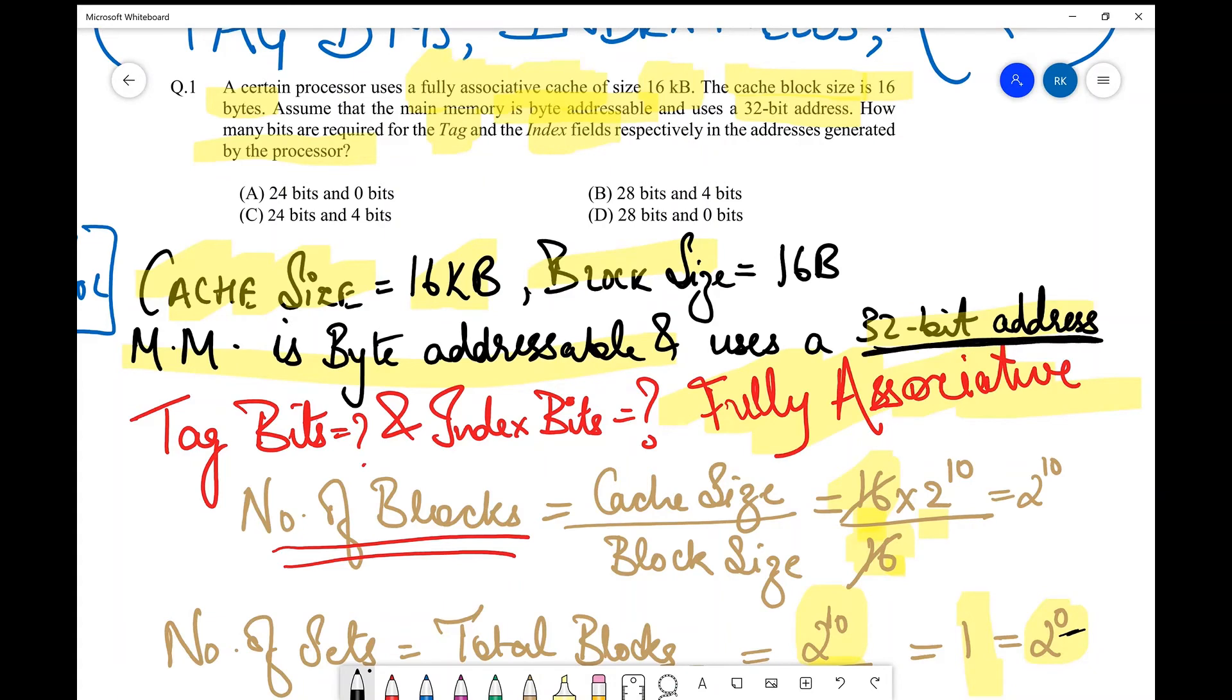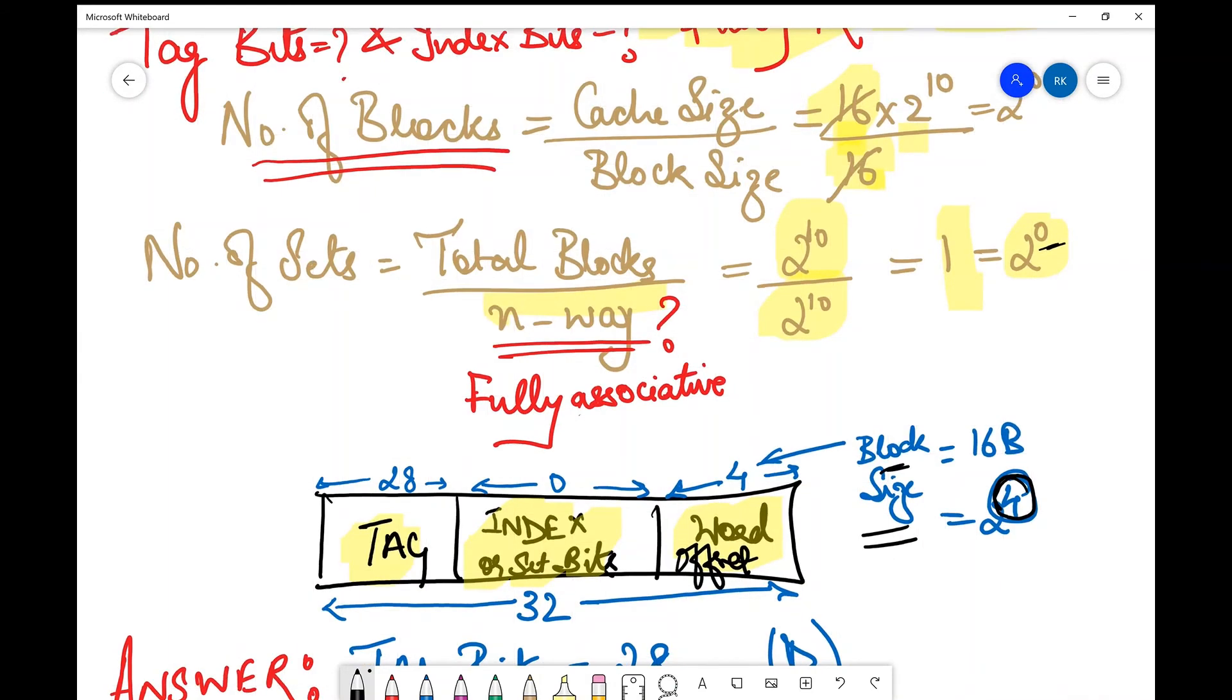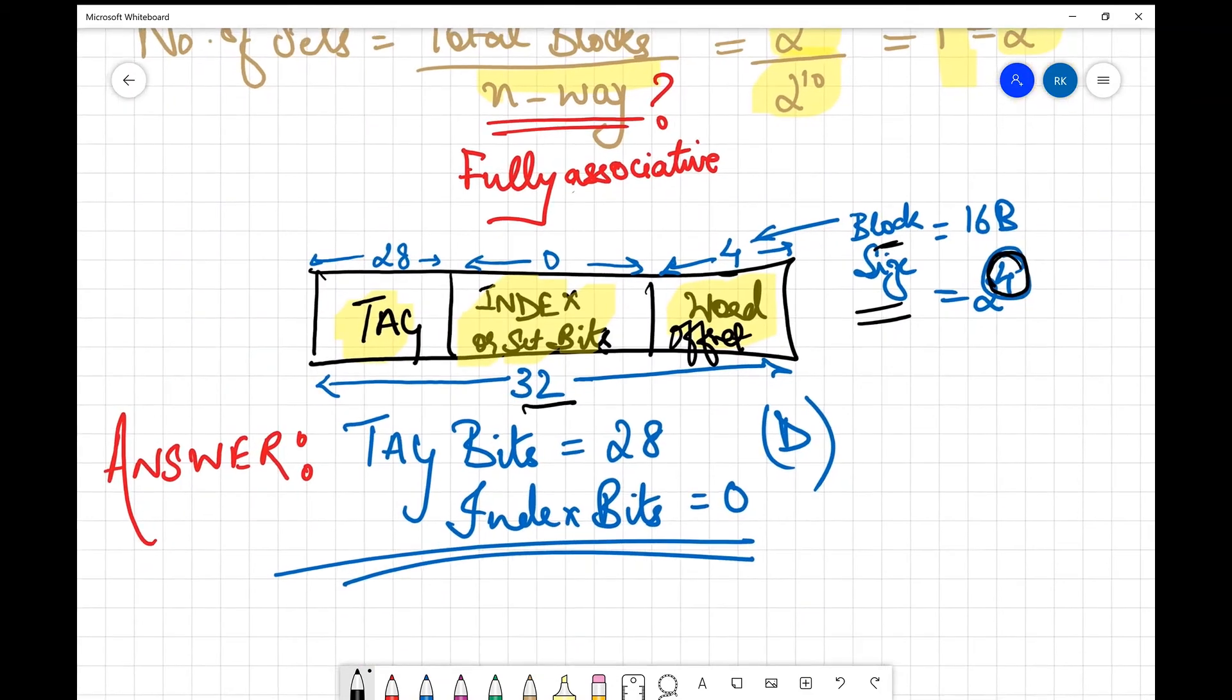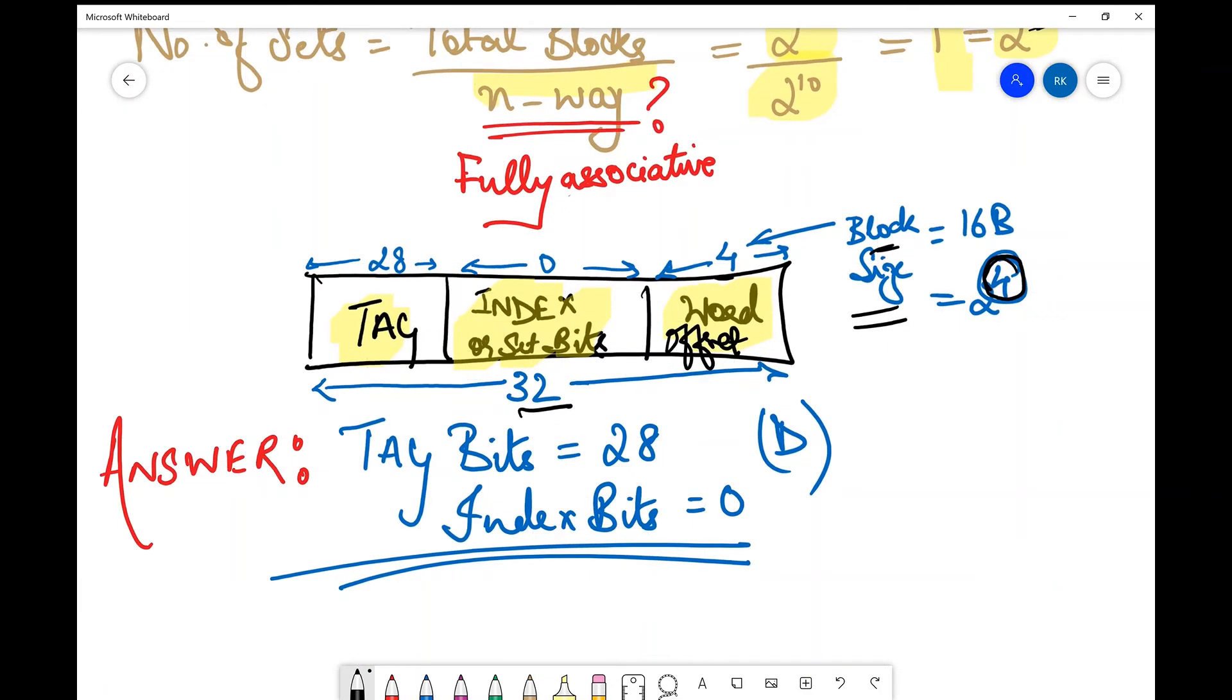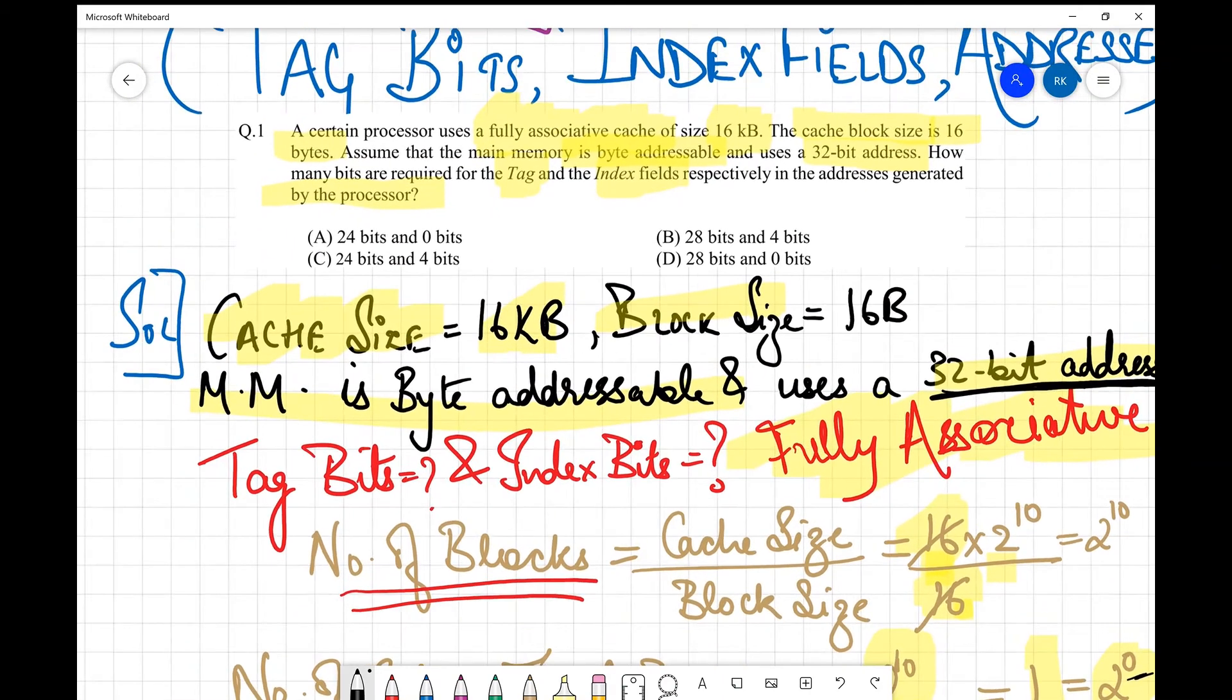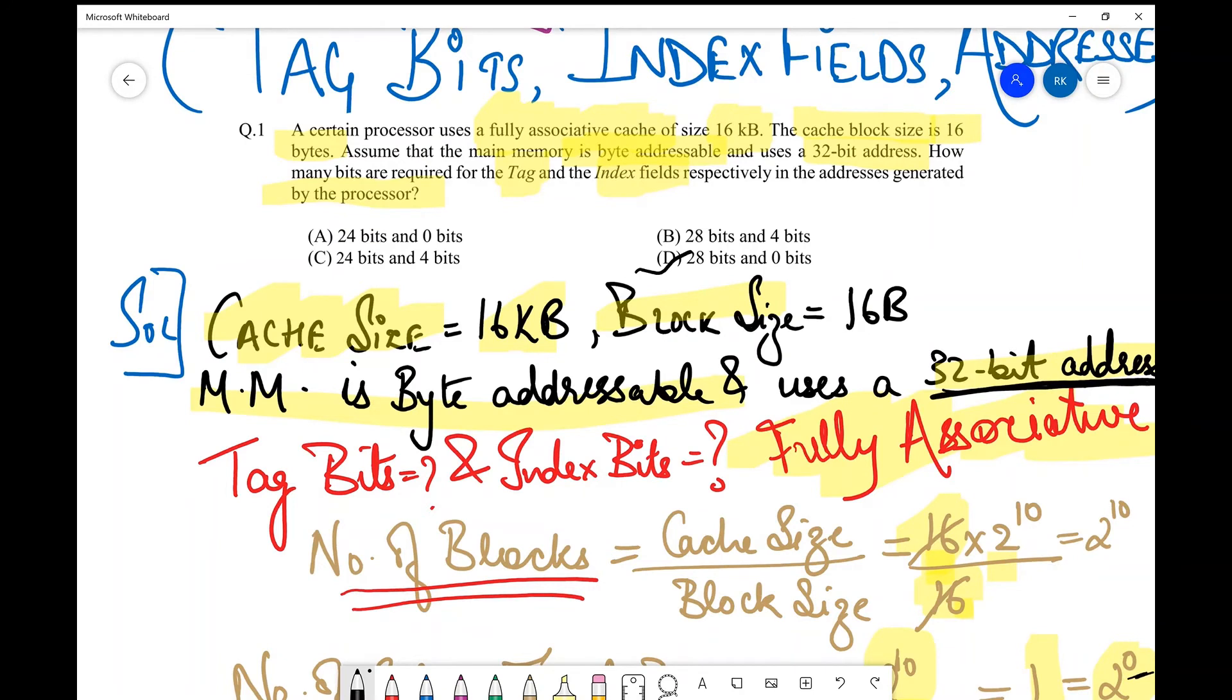And the tag bits we are going to find out by subtracting from the total. Now what was total? It was given that it is having 32-bit addresses, right? So therefore total is 32, this is 4, 32 minus 4 is 28. So therefore tag bits are 28. So the final answer over here is 28 for tag bits and index bits are zero. So if we see from the options, it is this D part. D part is the answer for this particular question.